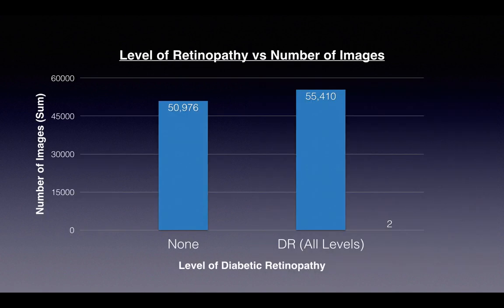One of the last things I did was change the classes: if you had any degree of retinopathy, you were designated as one, and anyone who was healthy was a zero. That actually helps rectify the class imbalance. As you can see on screen, there's maybe a four-and-a-half-thousand image difference between the classes, as opposed to the huge difference on the previous slide.